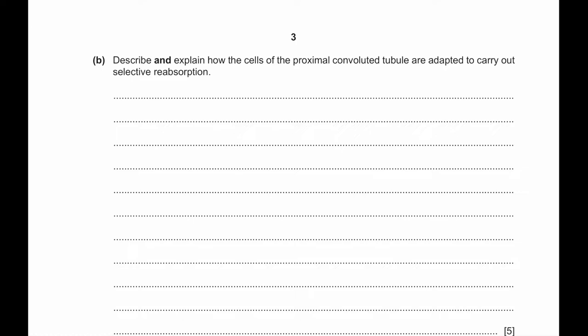Part B. Describe and explain how the cells of the proximal convoluted tubule are adapted to carry out selective absorption. The proximal convoluted tubule contains microvilli. These microvilli cells increase the surface area that is needed for many transport proteins. Sodium ions, glucose, and amino acids are co-transported into the cell from filtrate by transport protein. Sodium ions are pumped out of the cells into blood by active transport. Many mitochondria located in the cells provide energy. Tight junctions between them prevent migration of the protein.